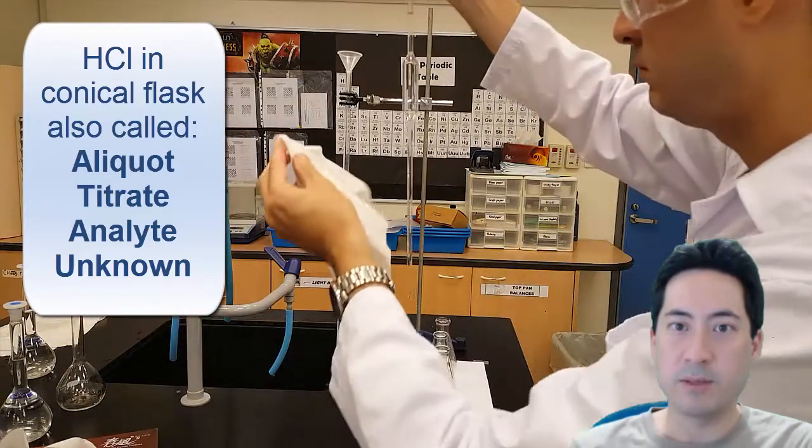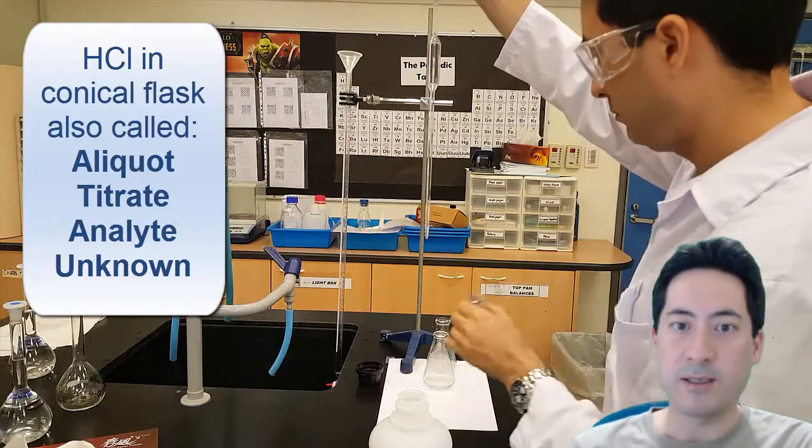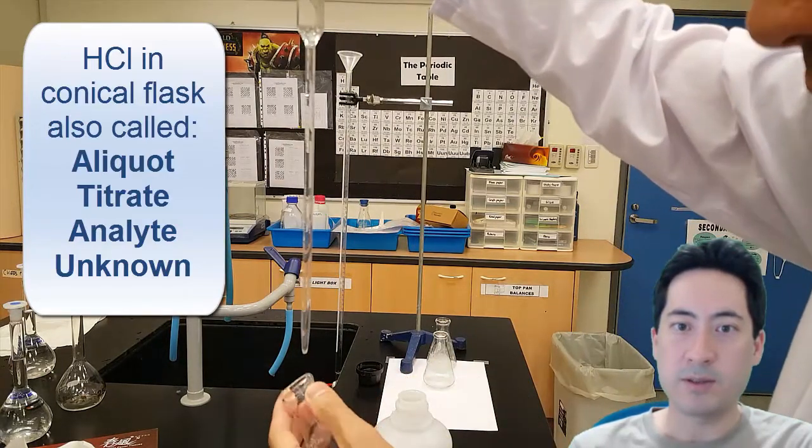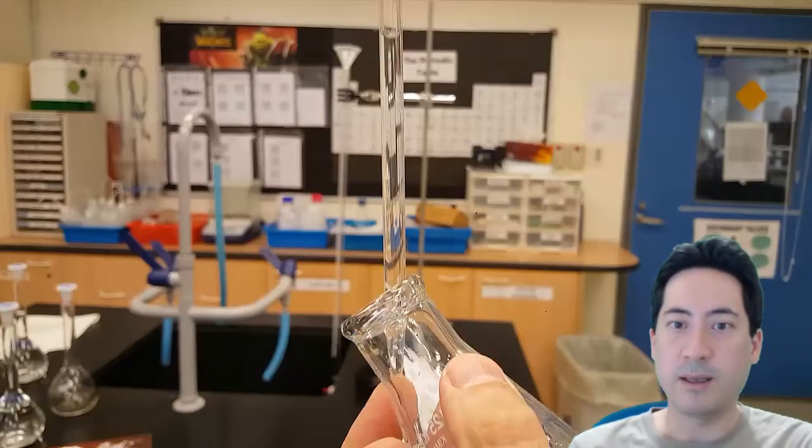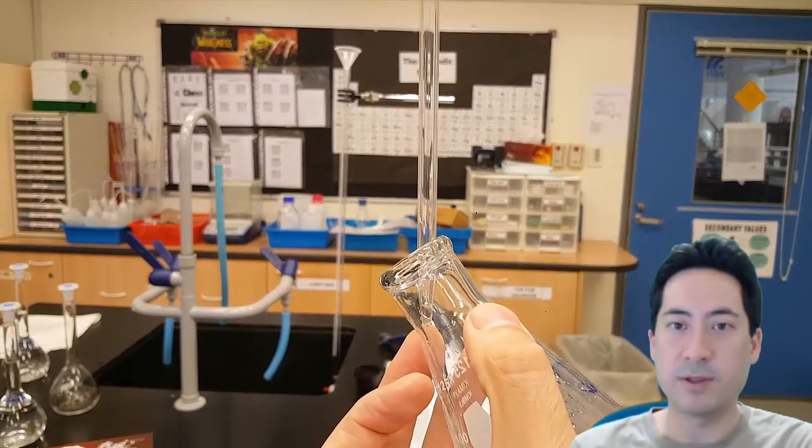Now to make sure no liquid drops down and I don't get more than what I want, I just get a tissue and wipe the sides of it. And as I release, I make sure that the whole thing is always vertical and I make sure the glass of the conical flask touches at a 45 degree angle.